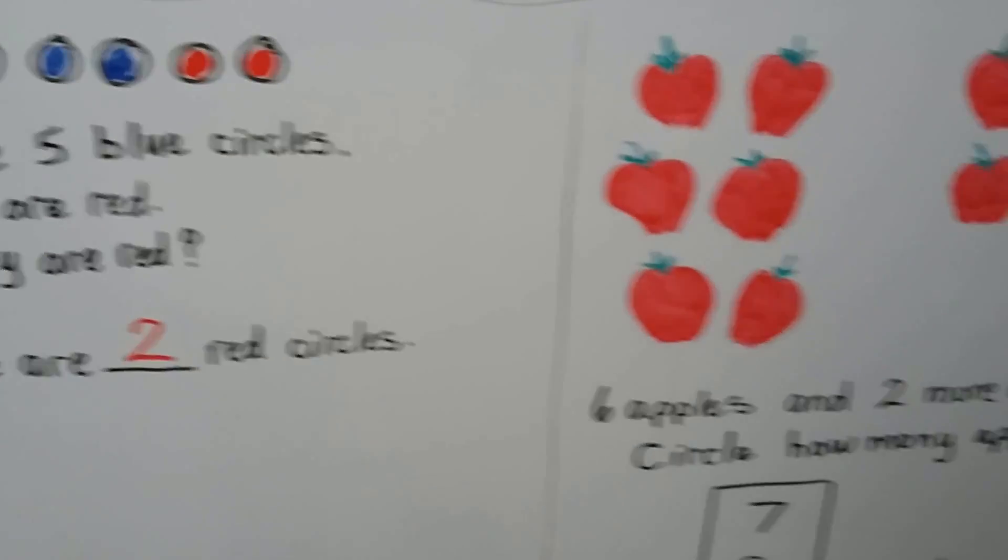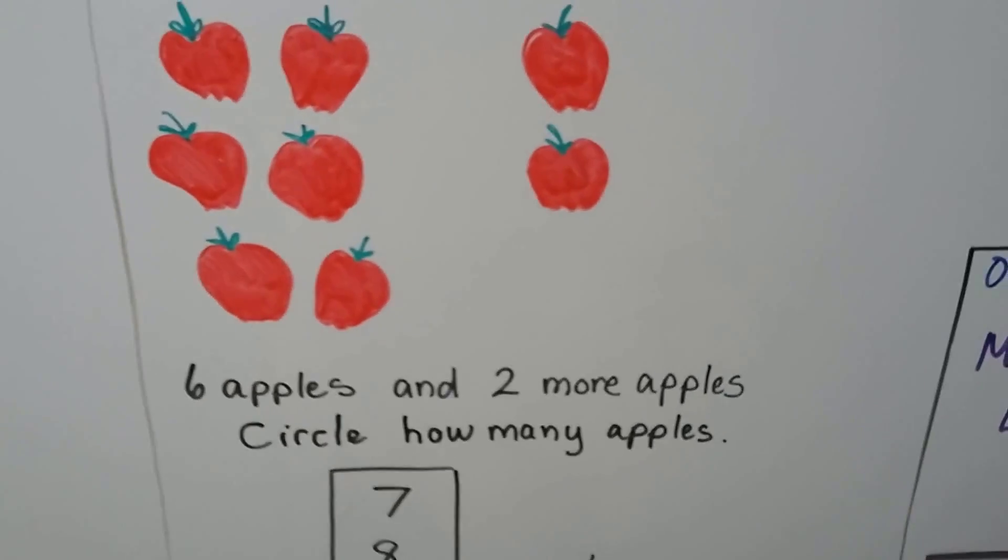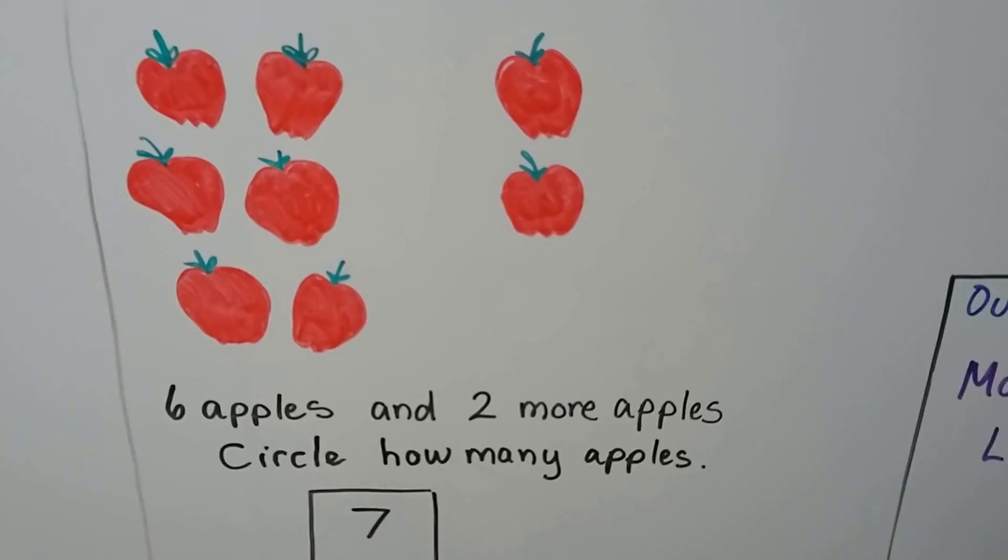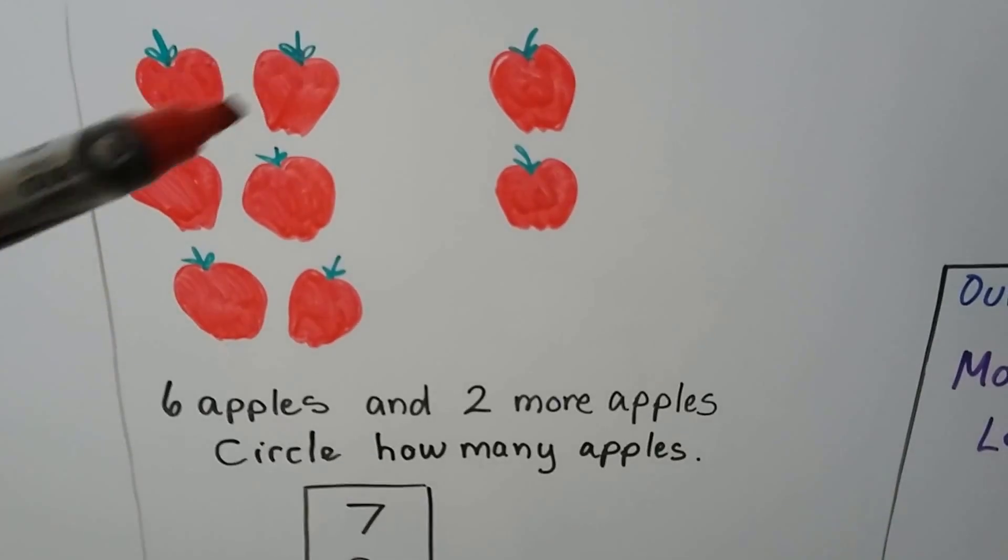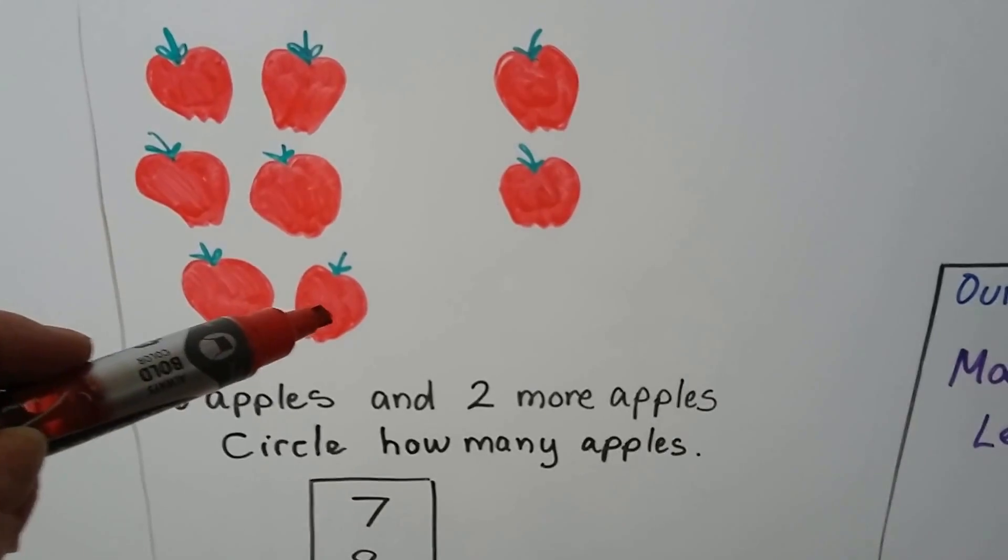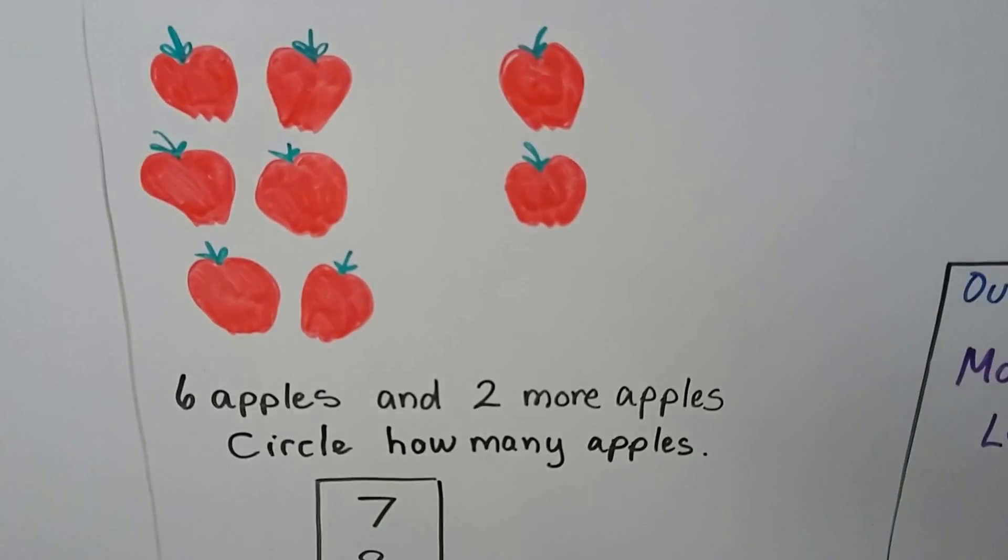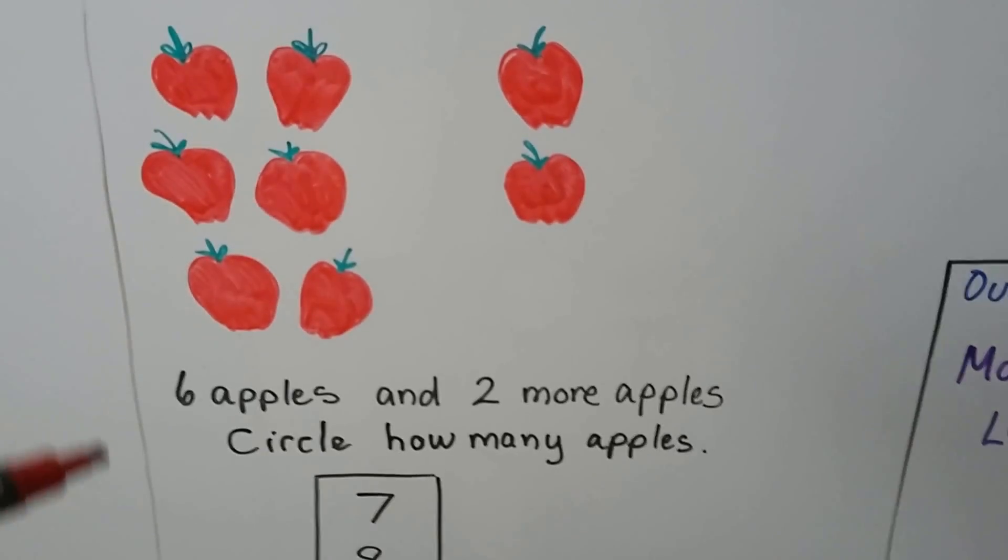Here we have some apples. Six apples and two more apples. Circle how many apples? One, two, three, four, five, six apples, and one, two more apples. We count them all together.